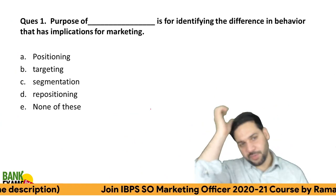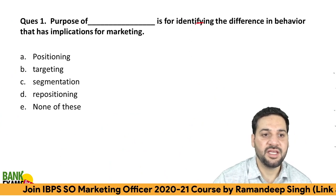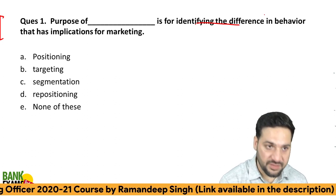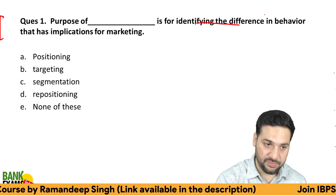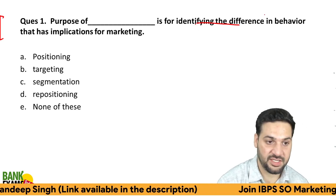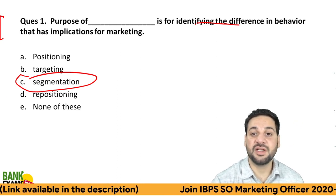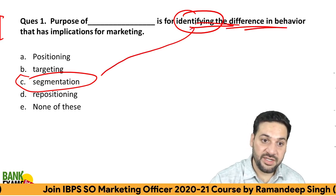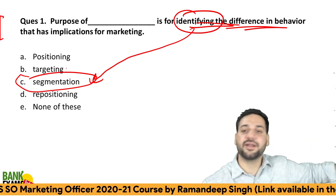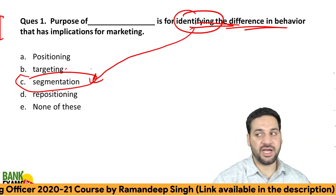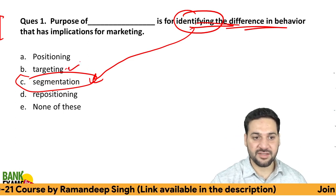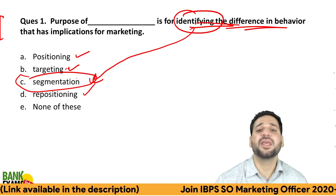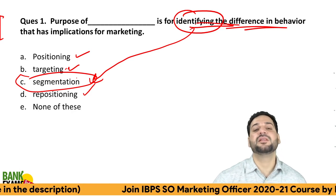Now let's come to the quiz question. 'The purpose of what is to identify the difference in behavior that has implication for marketing?' The options are: positioning, targeting, segmentation, repositioning. The answer is segmentation — the purpose of segmentation is to identify differences in behavior. Then we target a segment, making products and campaigns for it. Positioning is the image we want. Repositioning is a different story — Maggie was banned at one point and then repositioned itself.